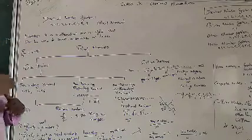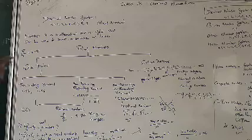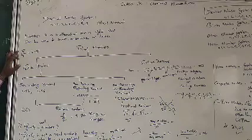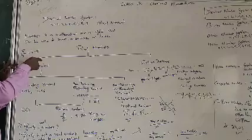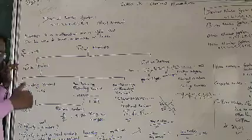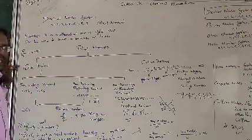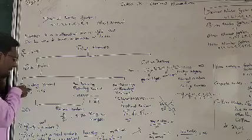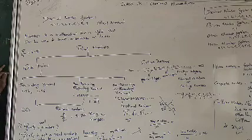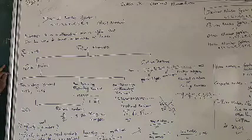Terminating means it ends. For example, 5 divided by 2 gives 2.5 — the remainder is 0, it stops there, it ends there. That is why we call those decimals terminating decimals.